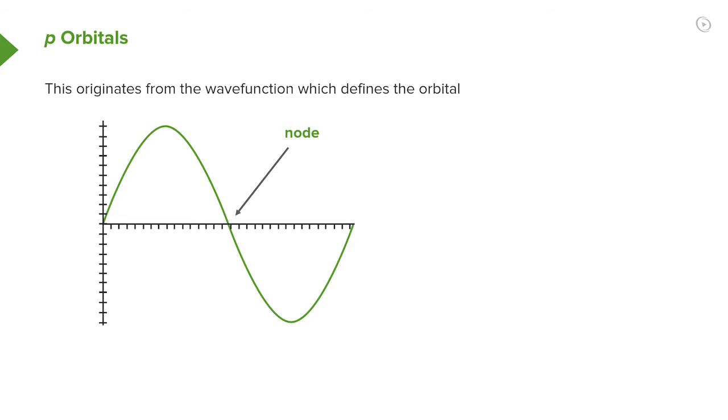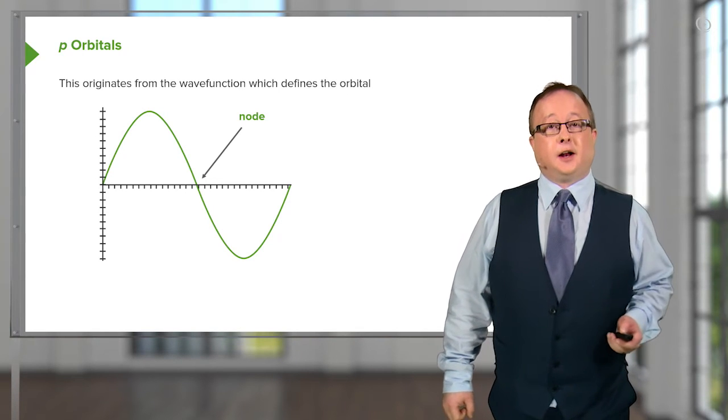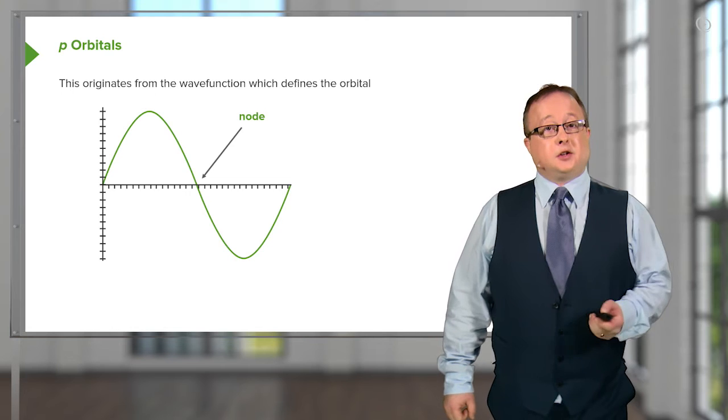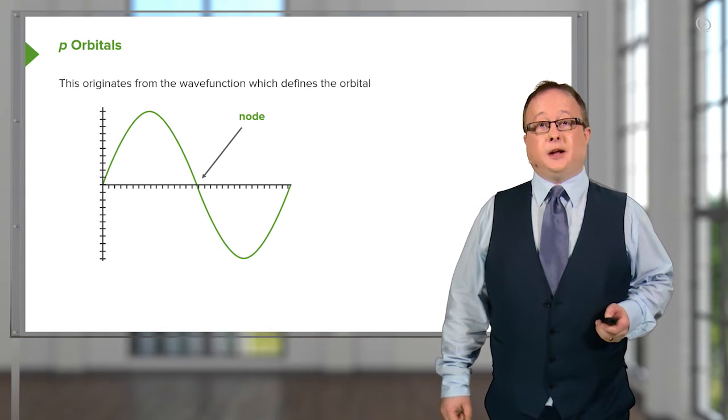So, as I mentioned, it's possible to treat electrons as waves, as well as particles. And in the context of the p orbital, this is very important. So, if we look at this waveform here, we can see that it is analogous to the dumbbell shape of our p orbital, where in the centre node, the chances of finding an electron are zero. But the chances of finding an electron either side are reasonably high.